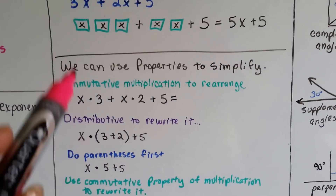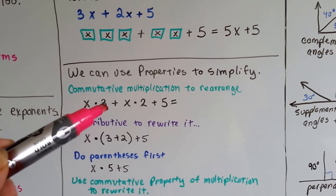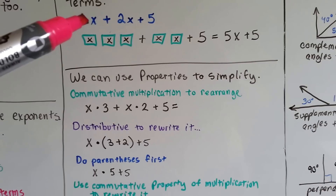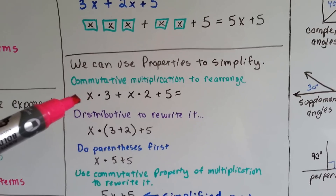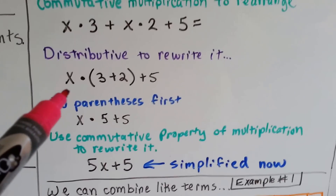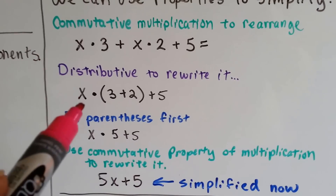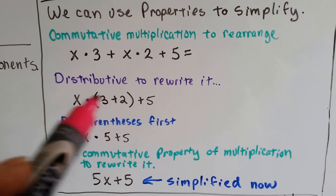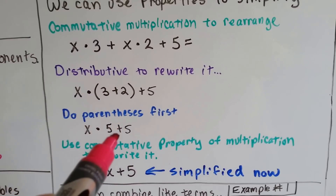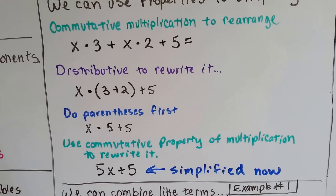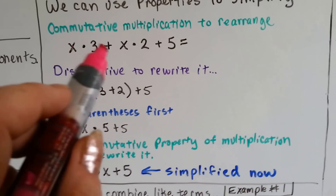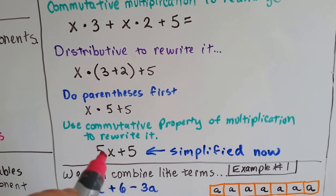We can use properties to simplify them. We can turn it around with the commutative property — commutative says it doesn't matter which way you commute, the distance is the same. So it doesn't matter if we use 3 times x or x times 3. Now we've got x times 3 plus x times 2 plus 5. We can use the distributive property to rewrite it, opening it up as x times 3 plus 2. Then we do inside the parentheses first and get 5, ending up with x times 5 plus 5. Using the commutative property again, we get 5x plus 5.